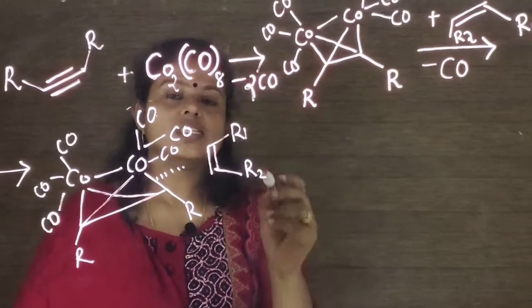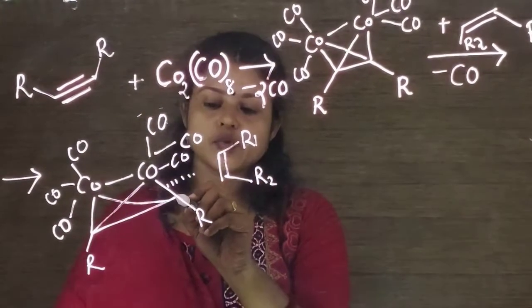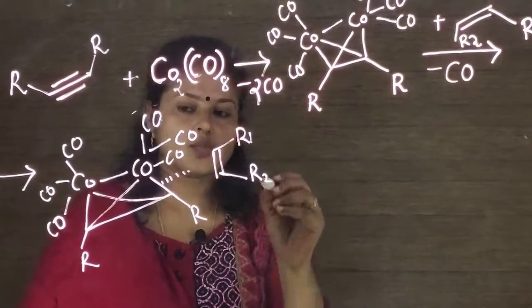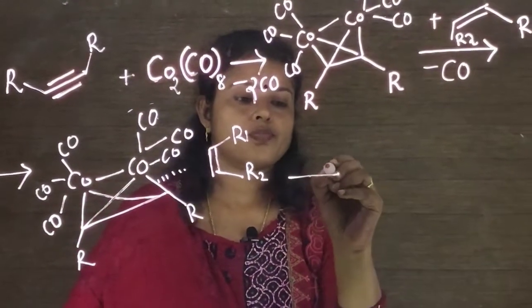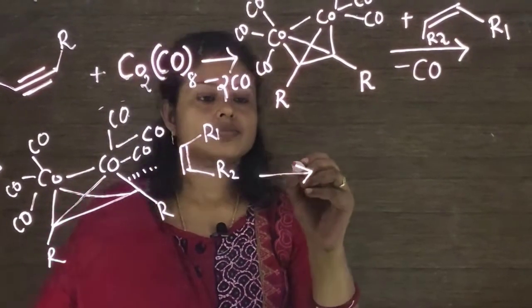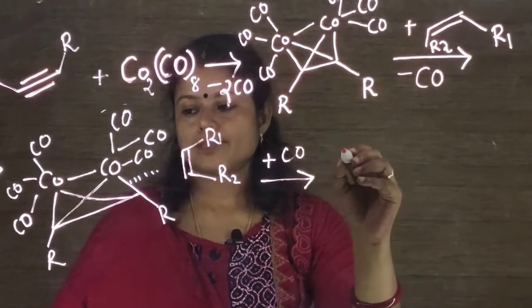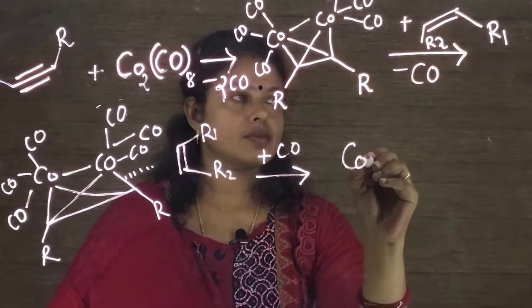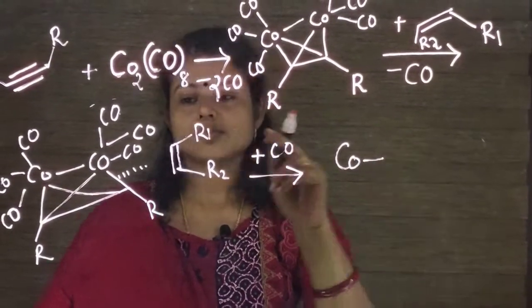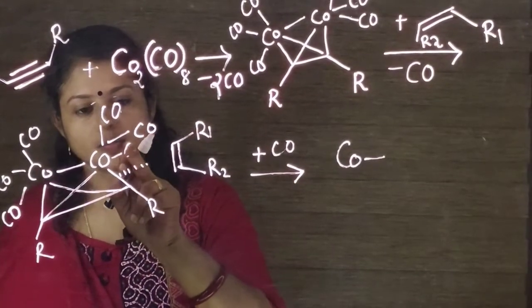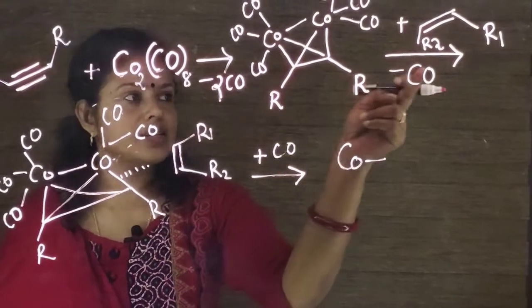So this alkene is inserted between this carbon and cobalt bond. So here one carbon monoxide is eliminated in this step.